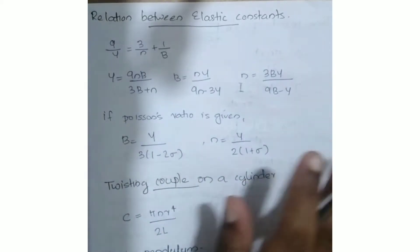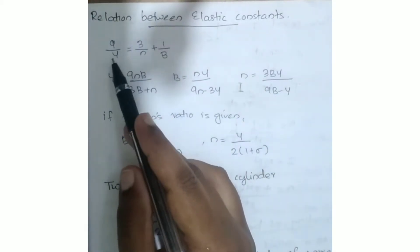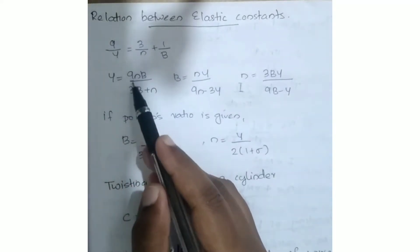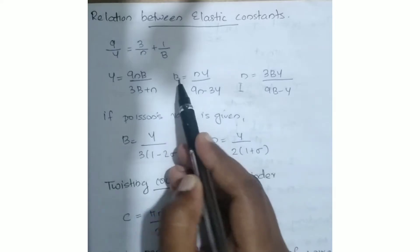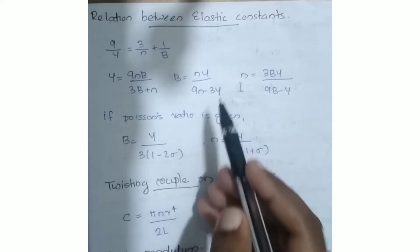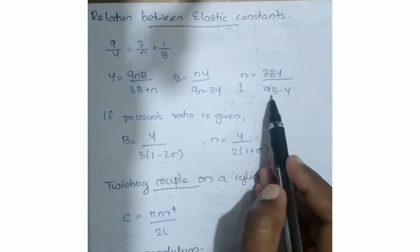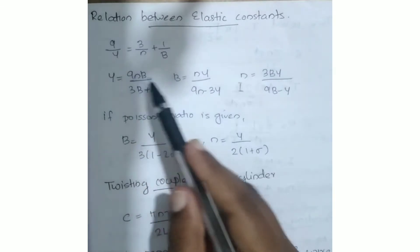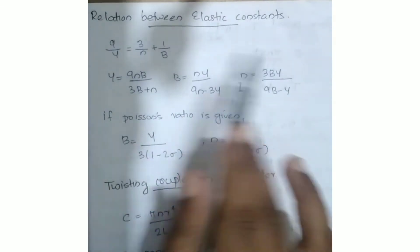From the relation 9/Y = 3/n + 1/b, we derive: Y is equal to 9nb divided by 3b plus n. Also, b is equal to n times Y divided by 9n minus 3Y. These equations relate Young's modulus Y, bulk modulus b, and rigidity modulus n.